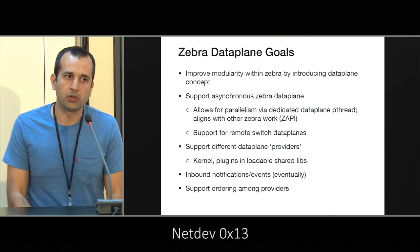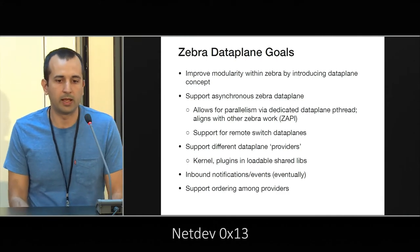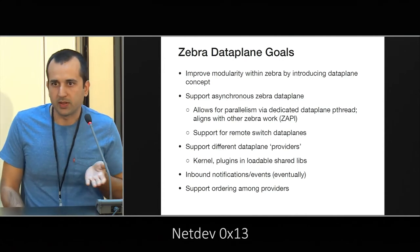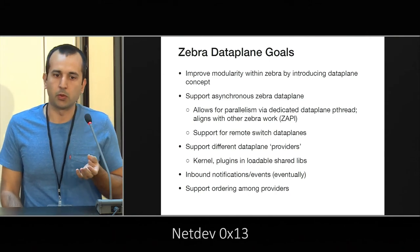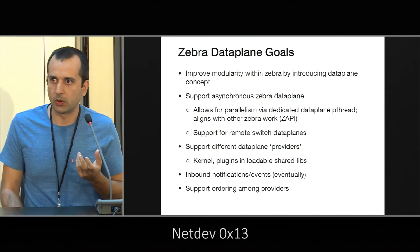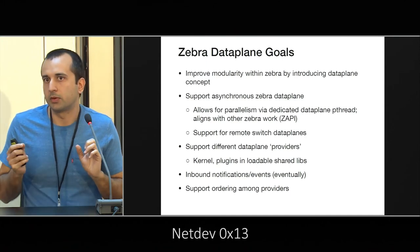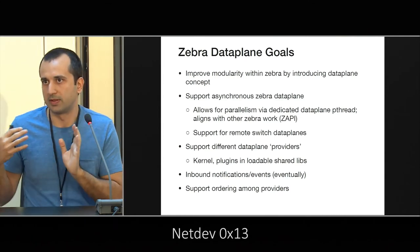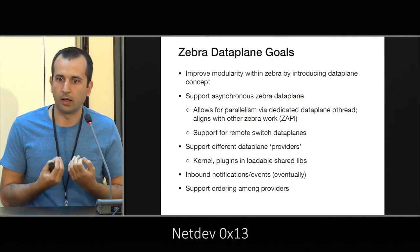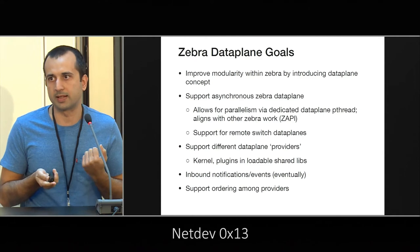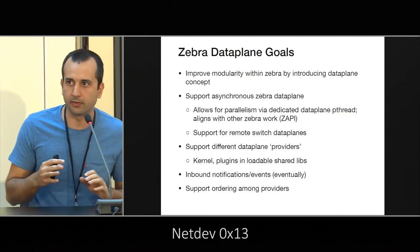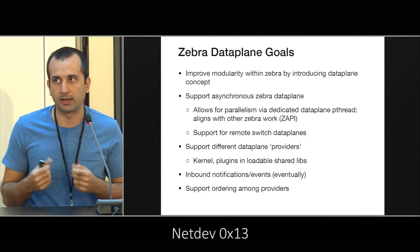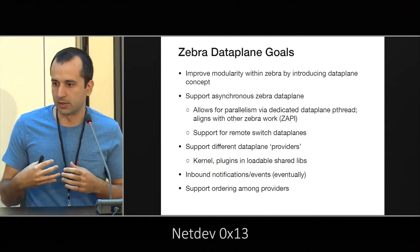The other goal was to support data planes that are not necessarily local. You might be working with physical boxes that are not co-located with Zebra. In the old model everything is synchronous — you install something, you wait for the result, and then you're done. But if you work with a box that's somewhere else, you need to make that asynchronous explicitly. You want an API that says: try to do this, then go do some other stuff, and sometime later you get a response saying it succeeded or failed, and then you update your state accordingly.